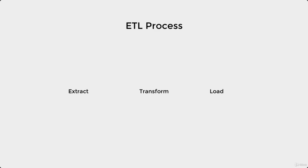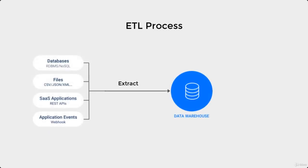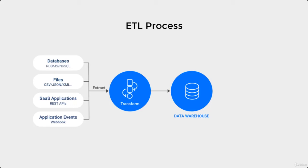Let's start with the first point: E for Extract. When you connect your data with your data warehouse, the data warehouse extracts the actual data from your source data. Once you have the data in the data warehouse, the second step is to apply and convert — or transform — this data by applying different filter tools or formatting tools to get meaningful information from it. That is the second part: Transform.